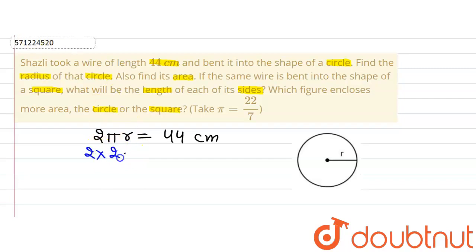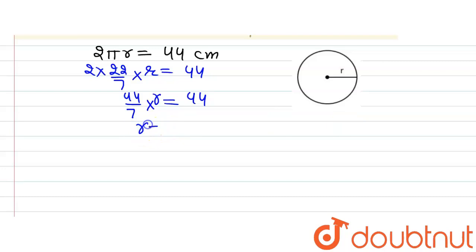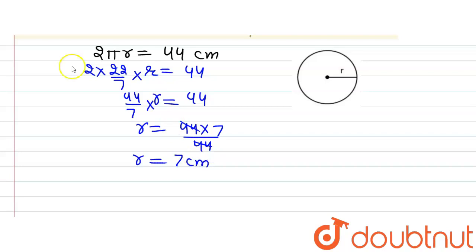Solving for radius: 2 × (22/7) × r = 44. This gives us 44/7 × r = 44. On simplifying further, r = 44 × 7 / 44. The 44s cancel out, so we get the radius of the circle as 7 cm. This is the answer to the first part of the question.